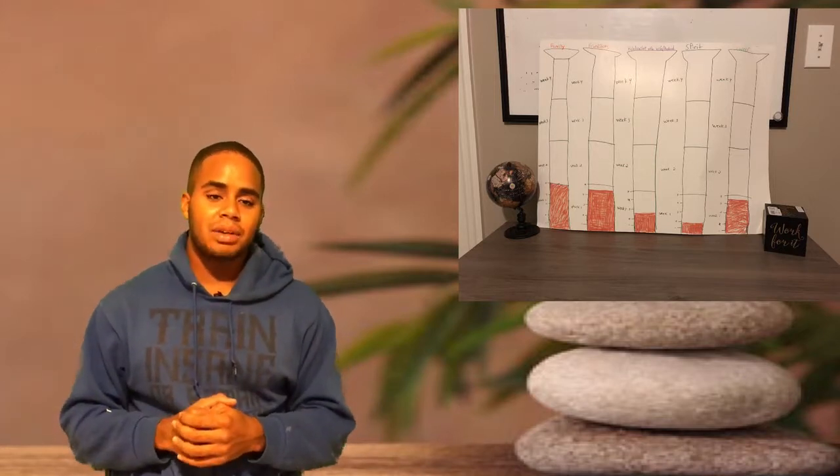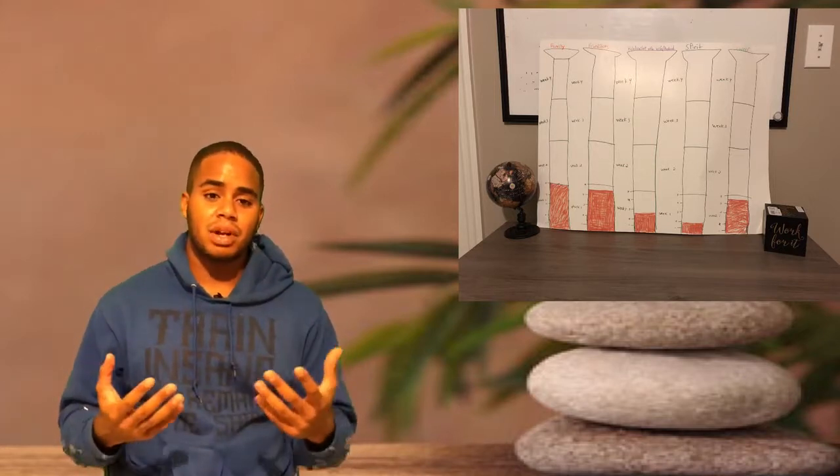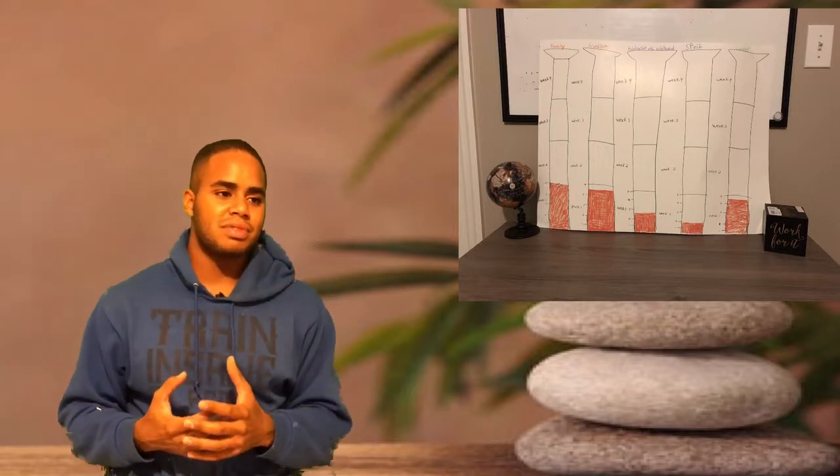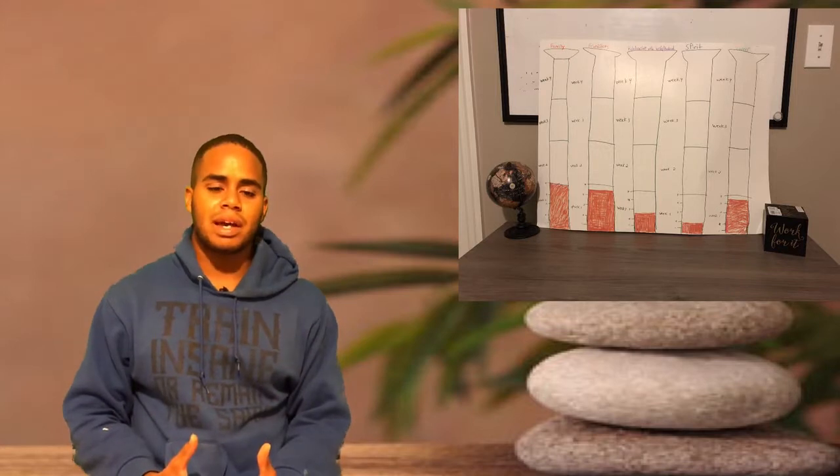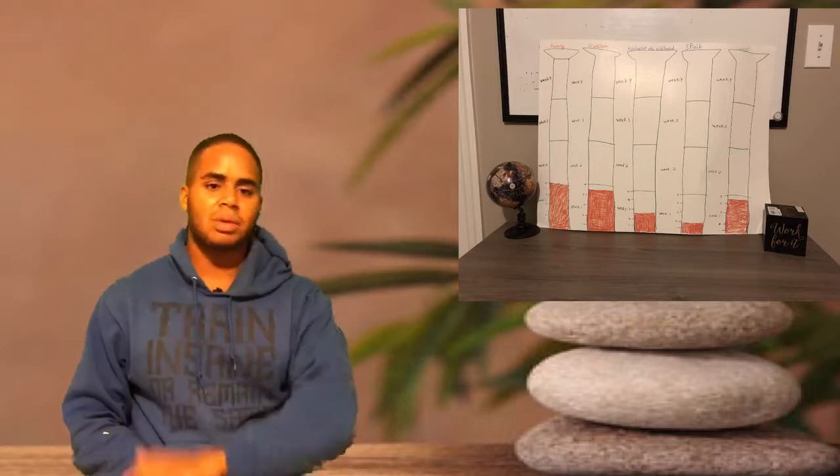I encourage everyone to give this method a try. Just be as transparent as you can and put yourself out there. If you do your pillar and you notice one area is really, really bad, ask yourself why is it bad? What about that area is just lacking right now? When I look at mine, it tells me I need to focus less on this category and focus more on this because it's not balanced.